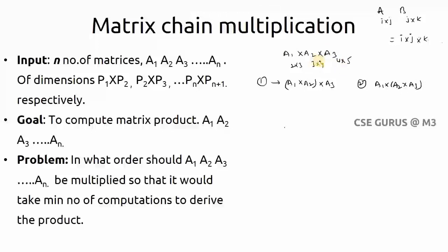How many ways can we multiply these three matrices? We have only two choices: first, multiply A1 and A2, then multiply the resultant with A3; or multiply A2 and A3 first, then multiply A1 with the resultant. Of course, both methods give the same answer, but we need to check how many computations each requires and find the minimum.